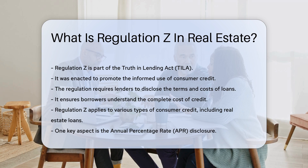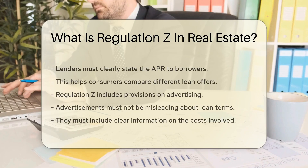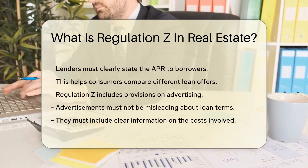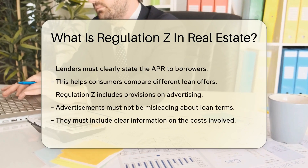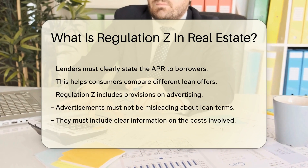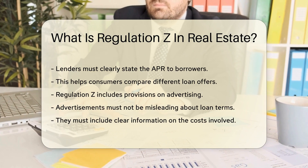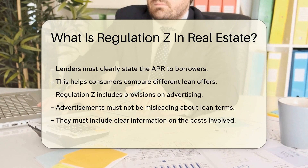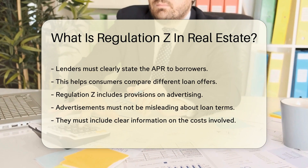One key aspect is the annual percentage rate, APR, disclosure. Lenders must clearly state the APR to borrowers. This helps consumers compare different loan offers.